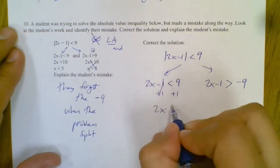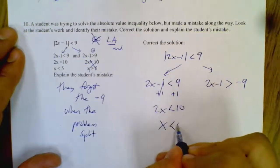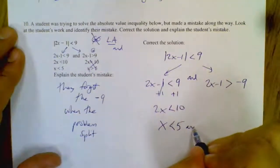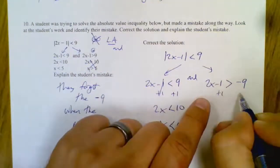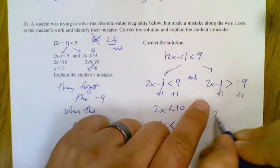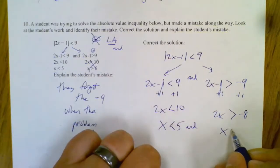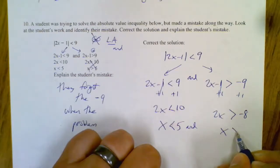2x is less than 10, x is less than 5, and this is an and, right? And here I add 1. Be careful when you add 1 here, 2x is greater than negative 8, x is greater than negative 4.